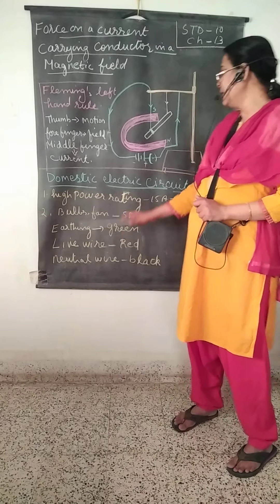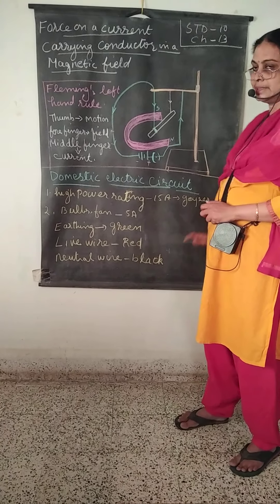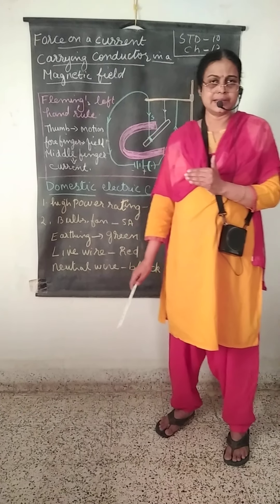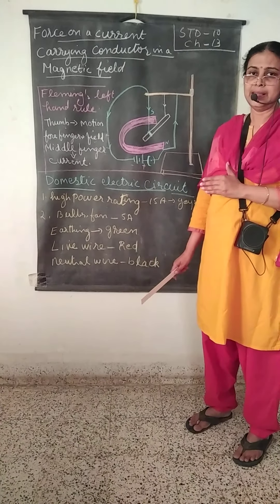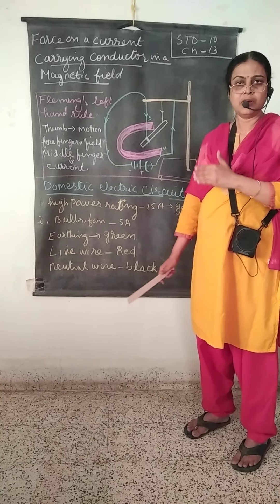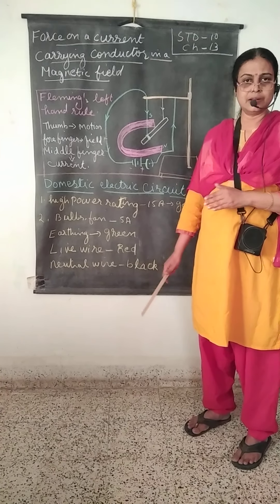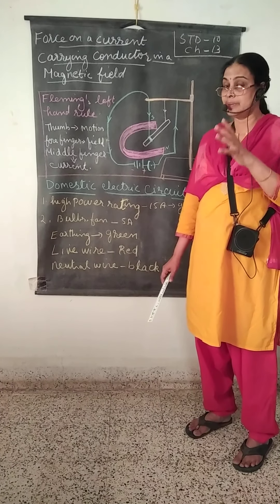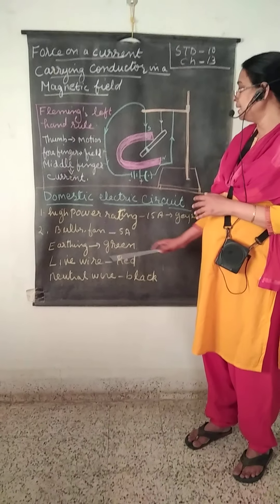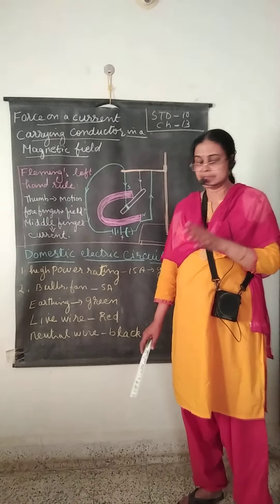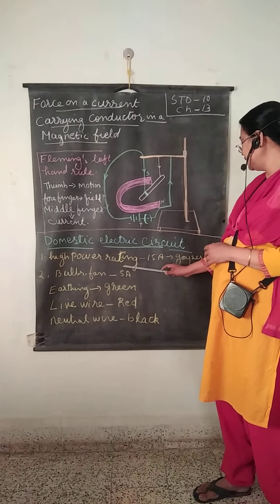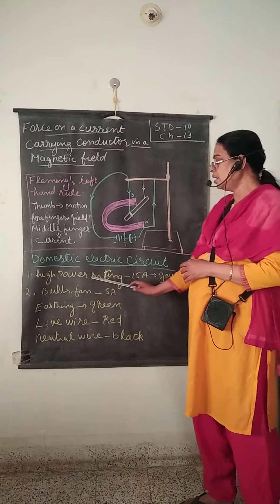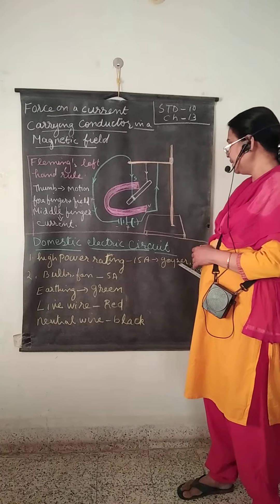Now let us discuss about the domestic electric circuit. At home we use electric connections from the main supply, either from an electric pole or an underground cable. There are two different types of circuits: a high power rating of 15 amperes used for geyser, air cooler, and similar appliances.